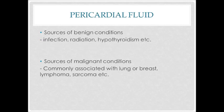Next, pericardial fluid. Sources of benign conditions can come from infection, radiation, and hypothyroidism. Meanwhile, sources of malignant conditions in excessive pericardial fluid are commonly associated with lung, breast, lymphoma, and sarcoma cancers.